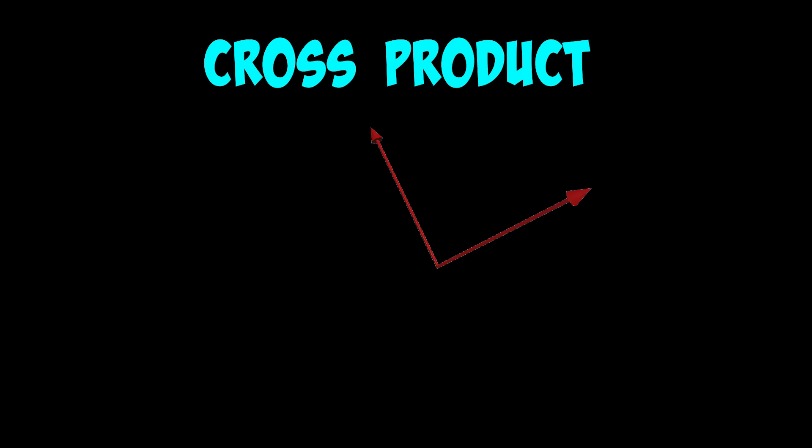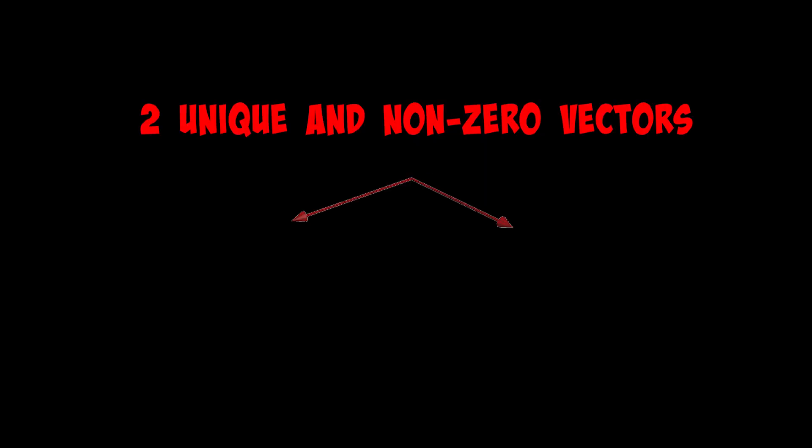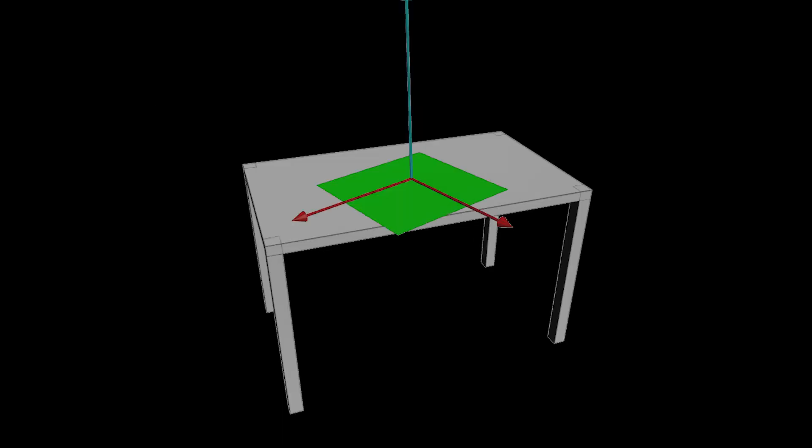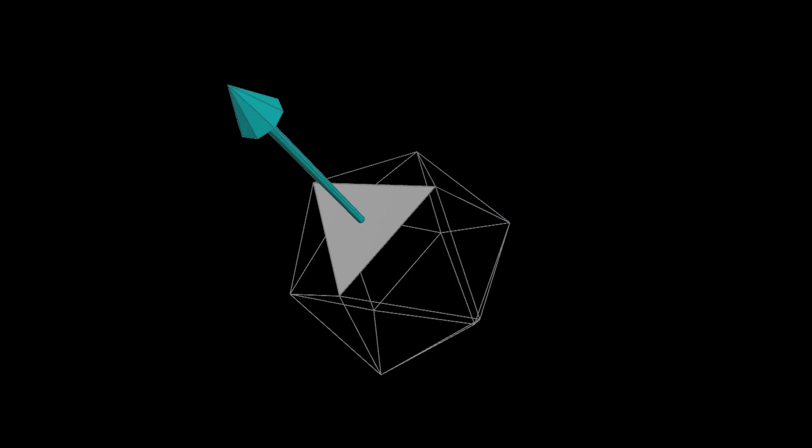The cross product takes two vectors to calculate the third orthogonal vector. Whenever you have two vectors, it will define a flat surface, because that's all it takes. Any two unique vectors that aren't completely zero will define a plane, or a flat surface like a table, or a single polygon on a geometry.